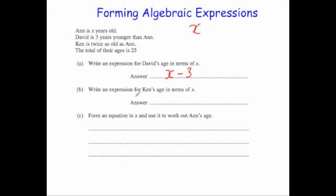Next, it says write down an expression for Ken's age. Well Ken is twice as old as Anne. So if Anne was 10, Ken would be 20. If Anne was 7, Ken would be 14. He's double her age, he's twice as old. So we need to multiply x by 2, and in algebra that would be 2x.